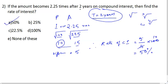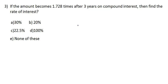For compound interest, if time is three years you use cube root, four years you use fourth root, five years you use fifth root. The next question: if the amount becomes 1.728 times after three years on compound interest, then find the rate of interest. Three years means we use cube root.